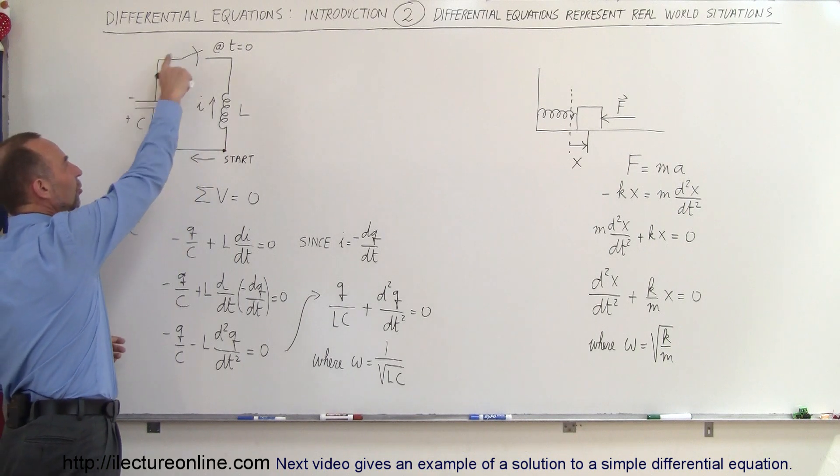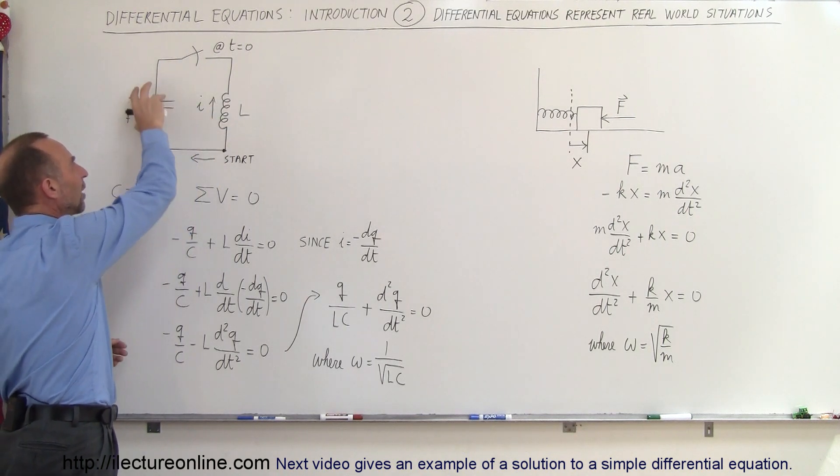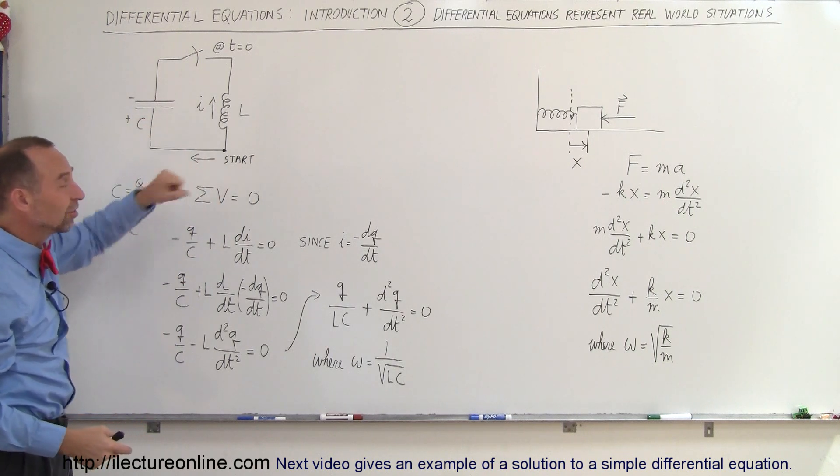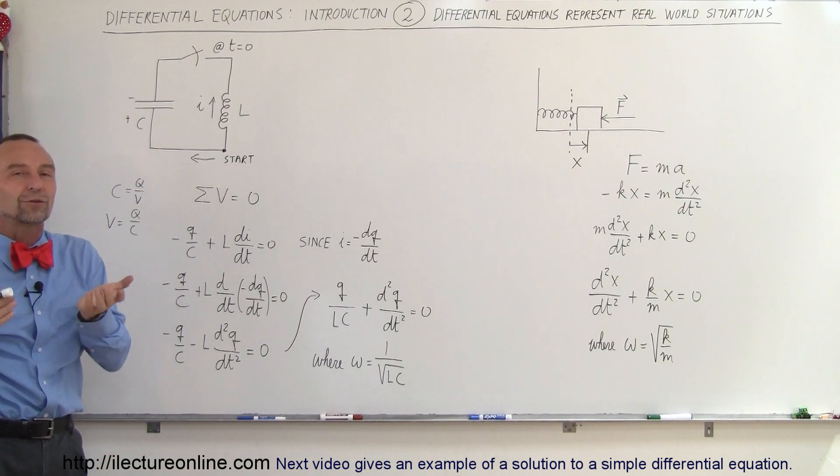we can sum up the voltages around the circuit across each of the components, and this should add up to zero. So the sum of all the voltages around the circuit must be equal to zero, that is of course one of Kirchhoff's rules.